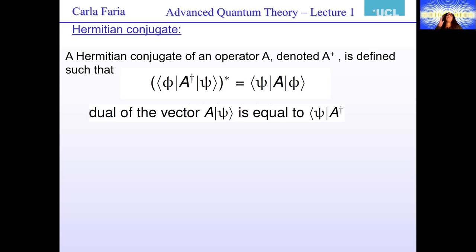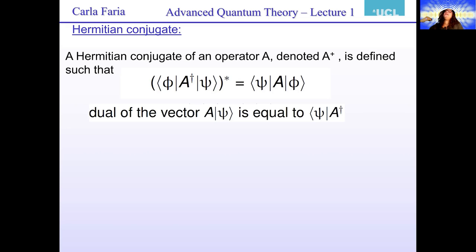If you get the ket A|ψ⟩, the corresponding bra is ⟨ψ|A†. This is important to define Hermitian conjugation using inner products because, for instance, people who modify inner products are going to use this a lot when they deal with pseudo-Hermitian Hamiltonians.